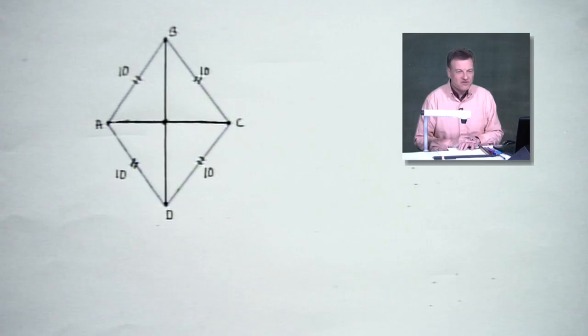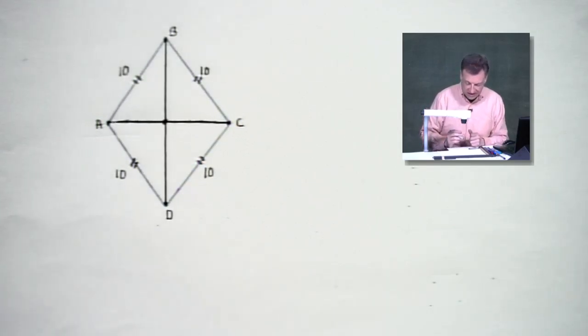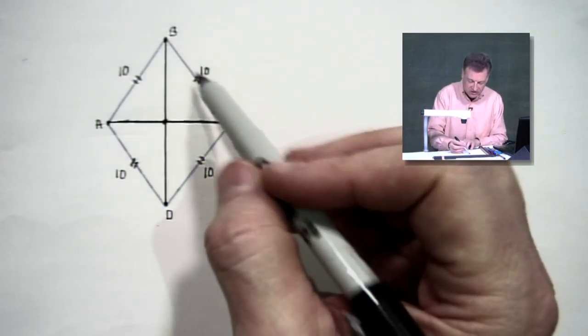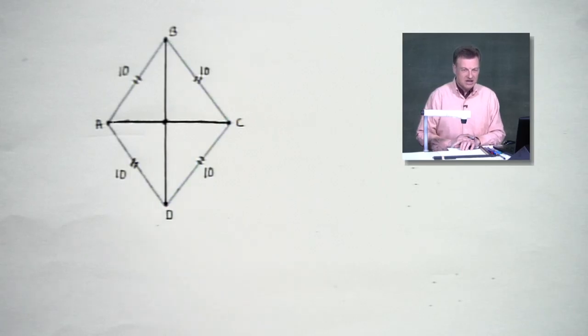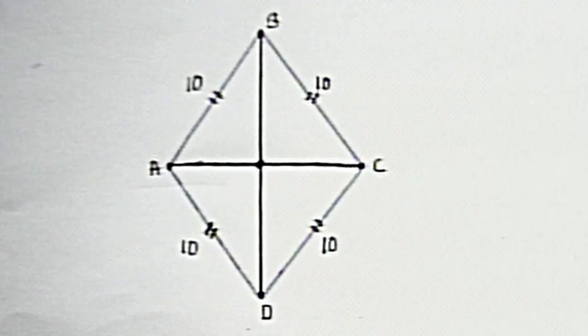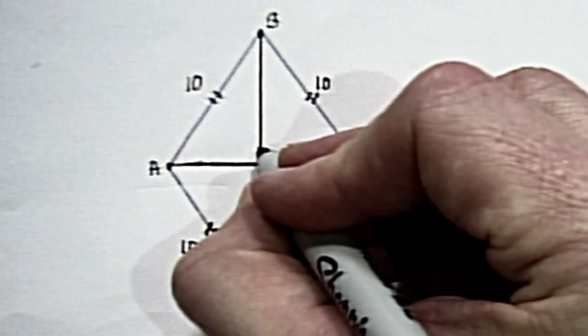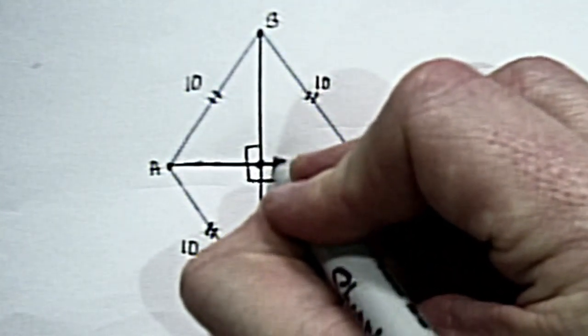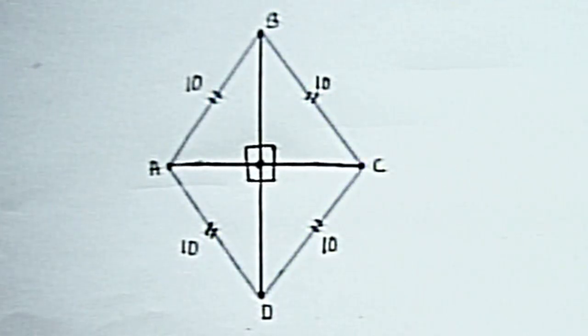Sometimes I give this problem to my students and they forget and put 40 on each side. That's not it - it says perimeter. Read carefully. Now, what we're going to do from here is talk about the diagonals. I drew a good rhombus, and these diagonals are intersecting and making right angles all over the place, which means I've got right triangles built into this figure.